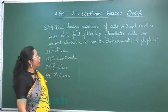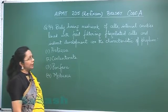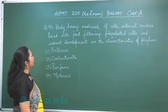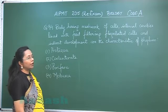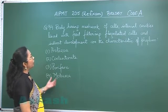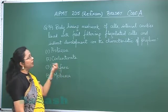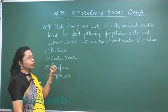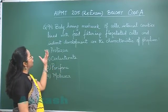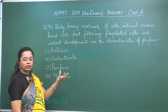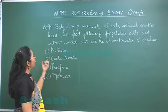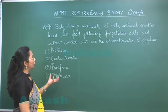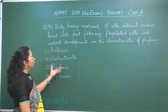Question 94: A body having a meshwork of cells, internal cavities lined with food-filtering flagellated cells, and indirect development are characteristics of which phylum? A meshwork of cells indicates a cell aggregate plan; the internal cavities are the canals of sponges, lined by food-filtering flagellated cells called choanocytes, and indirect development means there is a larval stage. These are characteristics of Porifera.